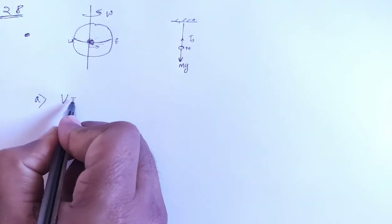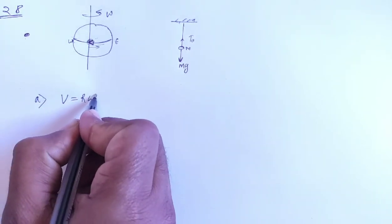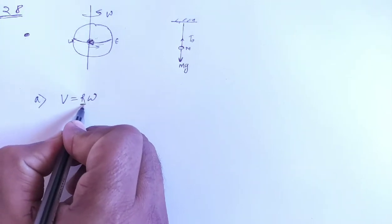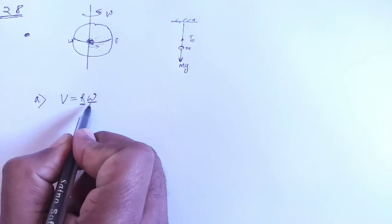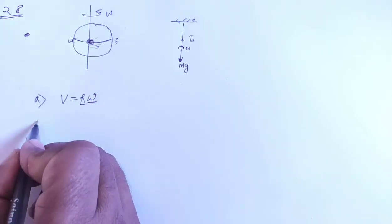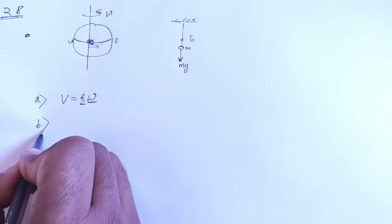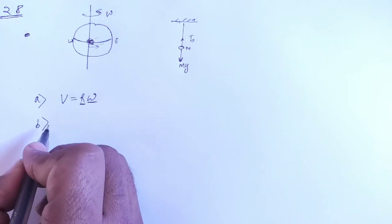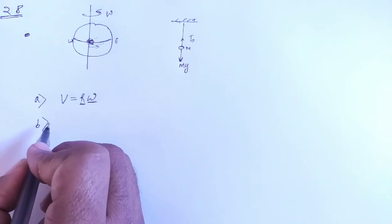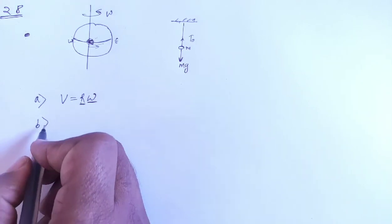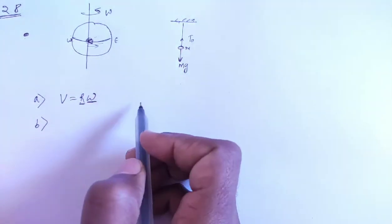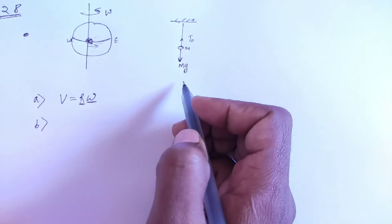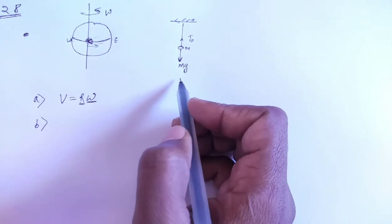v equals R omega, where R is radius of earth and omega is angular speed of earth. Speed of ship is R omega. Second, find the difference between mg and T0.